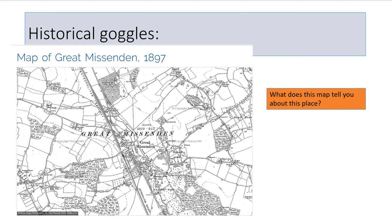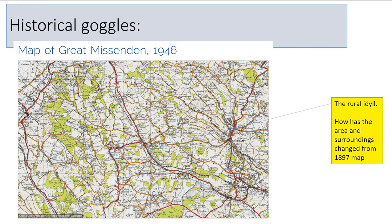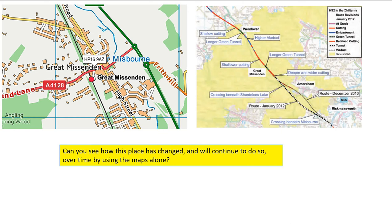Let's look at some cartographical evidence. This is 1897 — look at what features you can see and the endogenous factors at this point in time. Then juxtapose that with 1946, just post-World War II, to see how the area has changed. Then look at how it's grown in a linear fashion along transport arteries. We'll also come back to the proposal of HS2 running straight through this area of outstanding natural beauty.